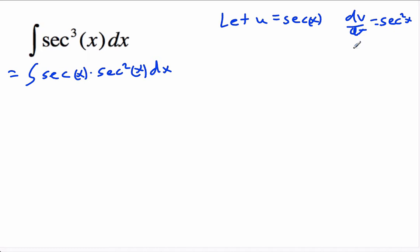This is easy to integrate. We've got v equals tan x, and this is easy to differentiate. The derivative du is secant x tan x dx.